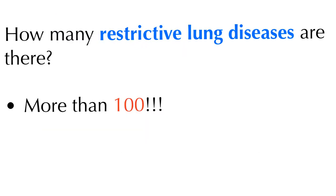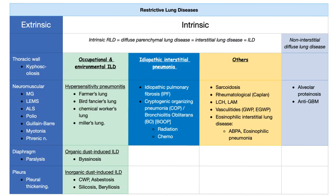There are five obstructive lung diseases: asthma, chronic bronchitis, emphysema, bronchiectasis, bronchiolitis. There are more than 100 restrictive lung diseases, so we won't cover all of them. As Abraham Lincoln said, if I had four hours to chop down a tree, I would spend the first two hours sharpening the axe. That's why I spend so much time laying down the foundation — because if you get this, it's over.